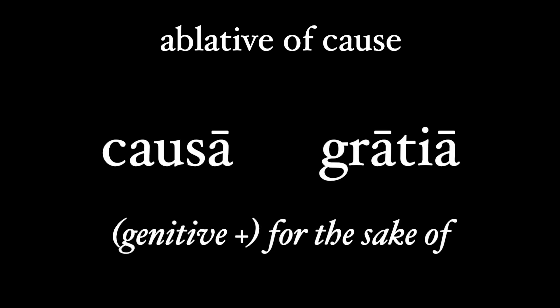There are two words commonly found in the ablative that, for the most part, we can treat as prepositions or postpositions, since they take a genitive that precedes or comes before them. So they are causa and gratia, both of which mean 'for the sake of,' technically as an ablative of cause.